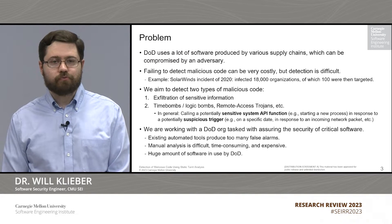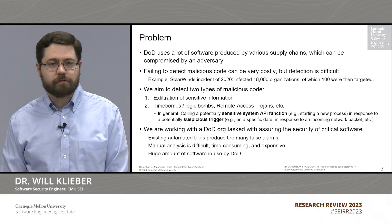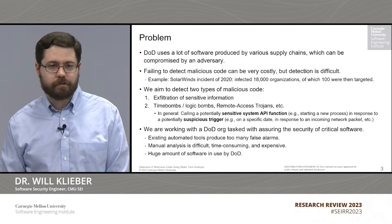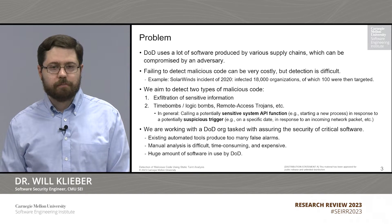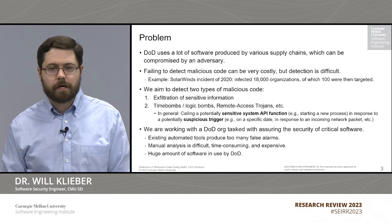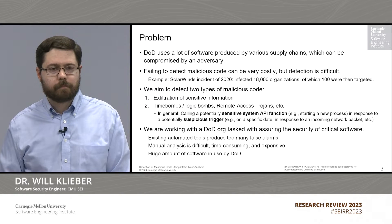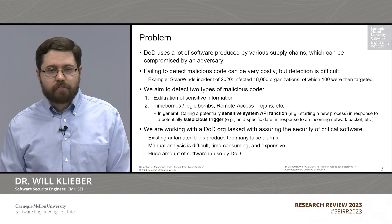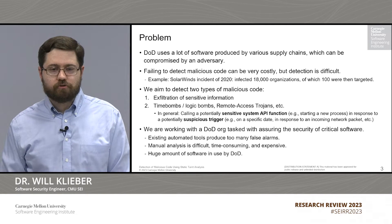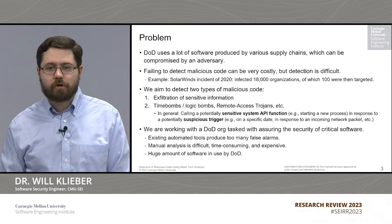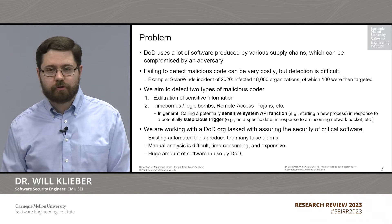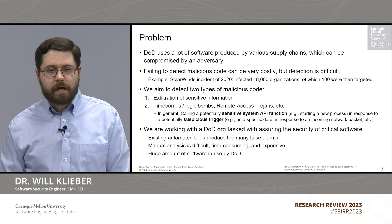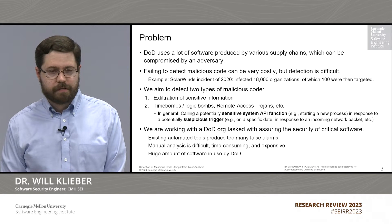DOJ uses a lot of software produced by various supply chains, which can be compromised by an adversary. Failing to detect malicious code can be very costly, but detection is difficult. For example, in the SolarWinds incident of 2020, there were 18,000 organizations infected with malicious code, of which 100 were then targeted by the threat actor for further exploitation. This attack went on for months before it was detected.